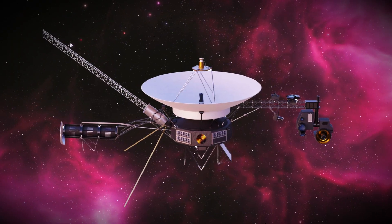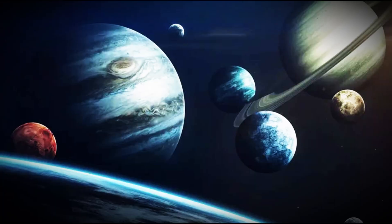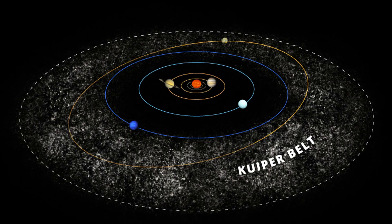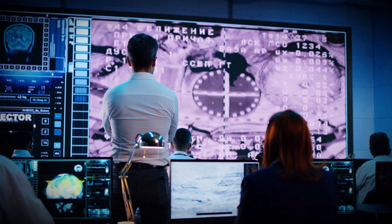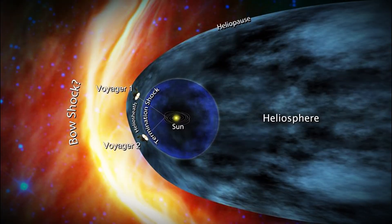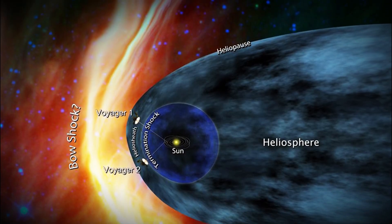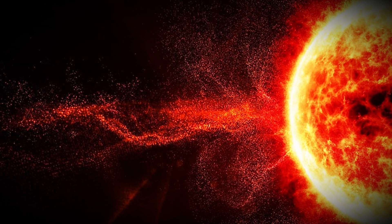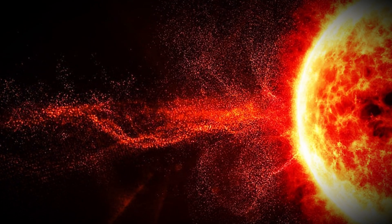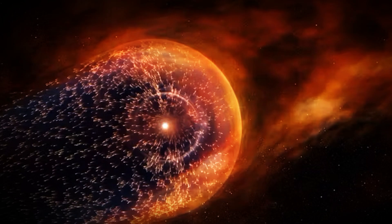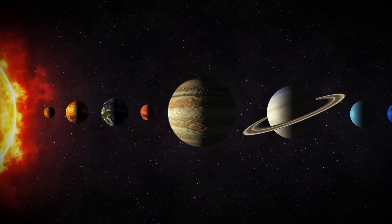The Voyager probes revolutionized our understanding of space, capturing detailed images of the outer planets and offering the first glimpses into the Kuiper belt and beyond. They've also helped scientists explore a fundamental mystery: where exactly does our solar system end and interstellar space begin? Our Sun constantly emits streams of plasma into space through what we call solar winds, creating a vast, spherical bubble of charged particles known as the heliosphere, an invisible atmosphere that envelopes our entire solar system.